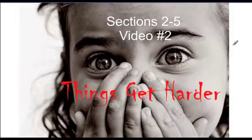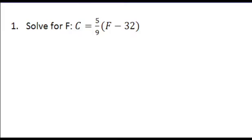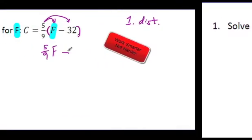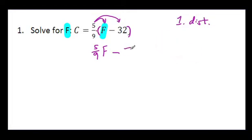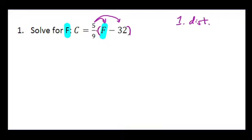So the first thing we're going to do is look at the first equation on your notes. We have four problems we're going to solve and we're going to go through each one. That is like 17.778 if you change it to a decimal, or some ridiculous fraction. There's no point in doing that — it didn't help. So let's back up. I'm going to get rid of this work. So instead of distributing, let's look at this.